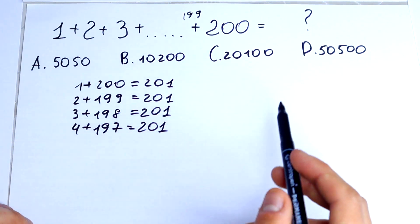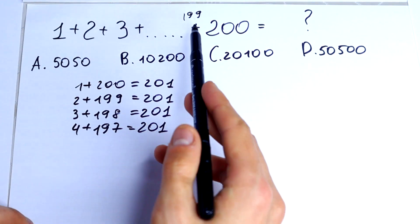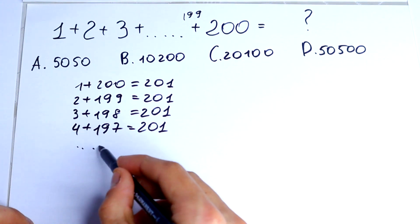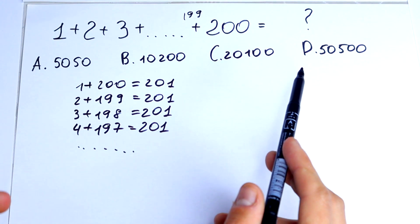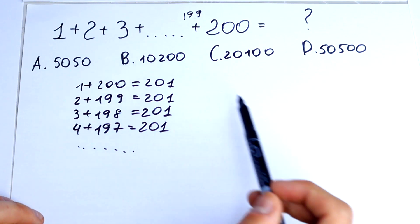How many pairs do we have? Here we have 4 pairs and we should do the next steps. It's not hard to think that these pairs would be 100 pairs.